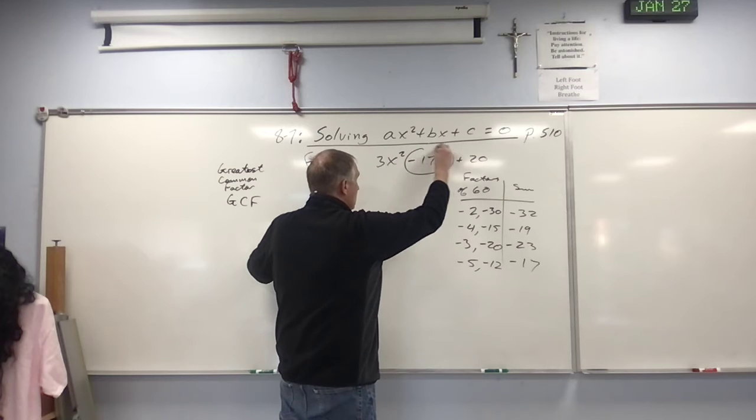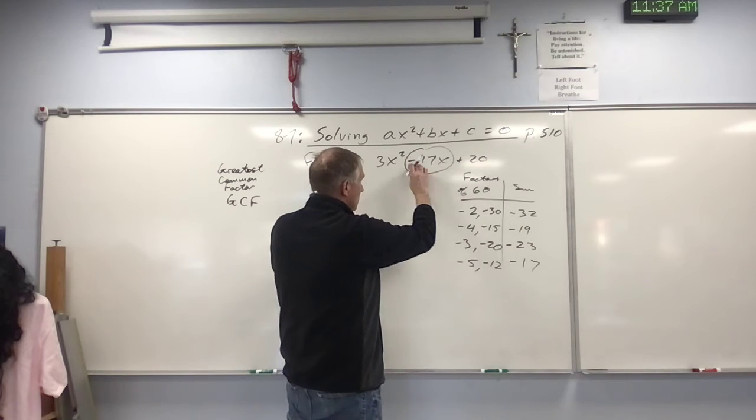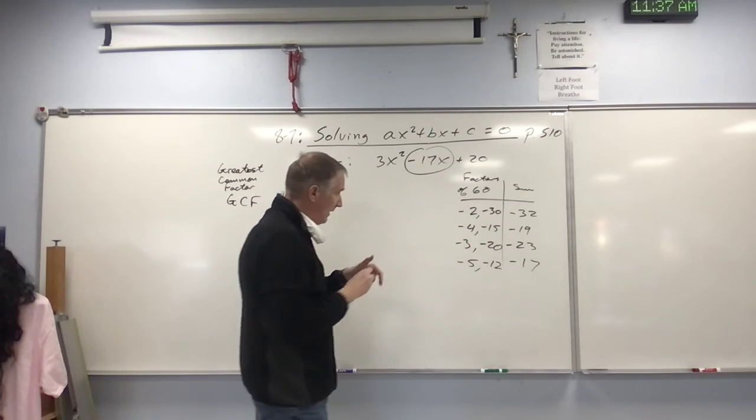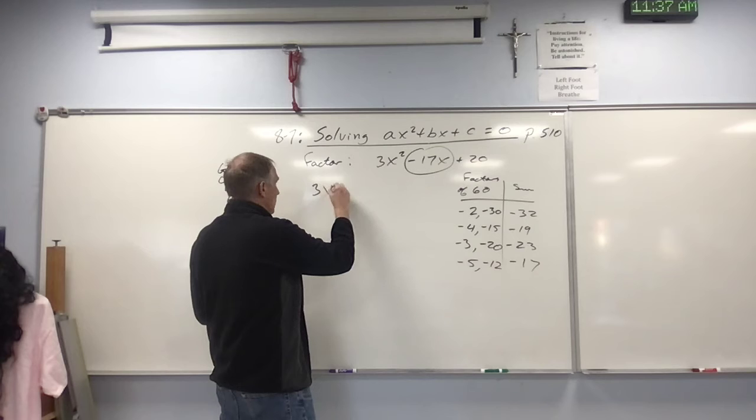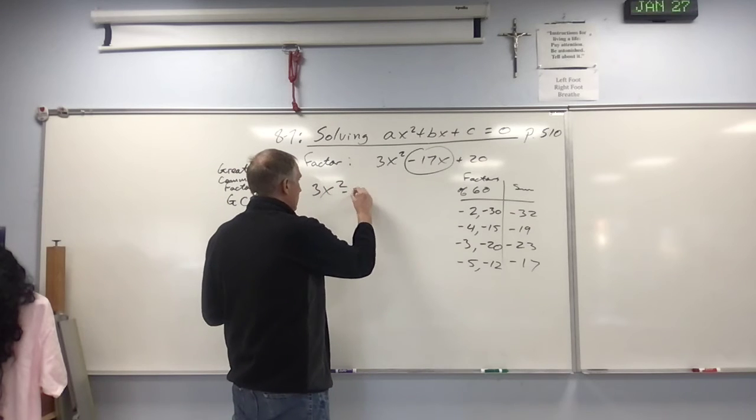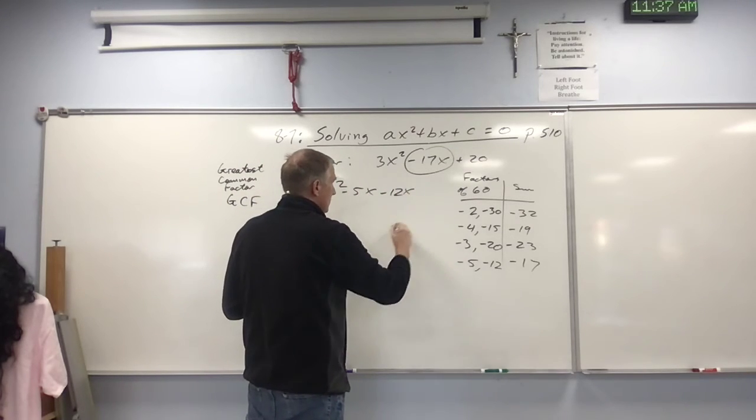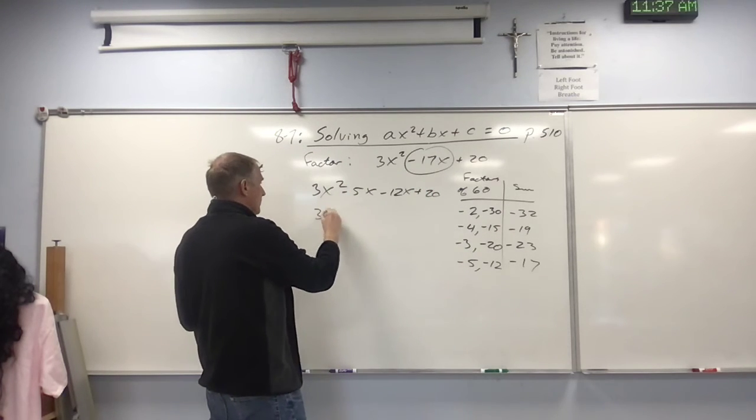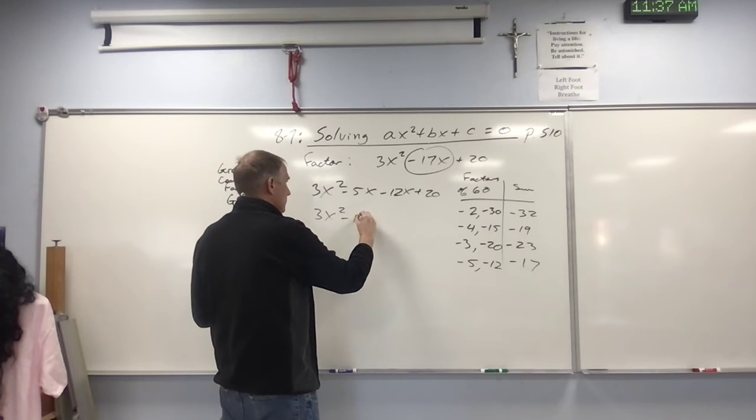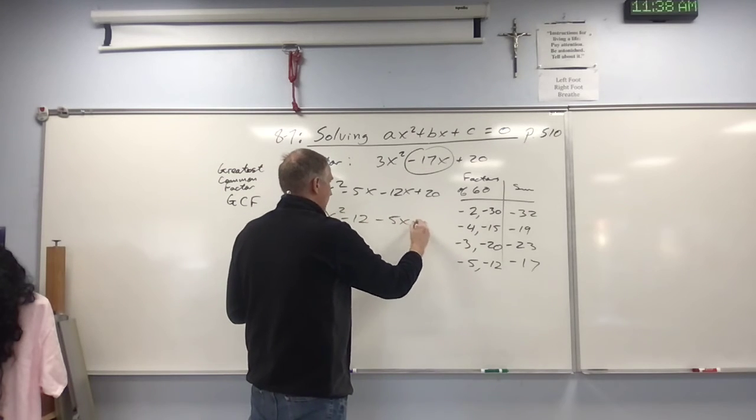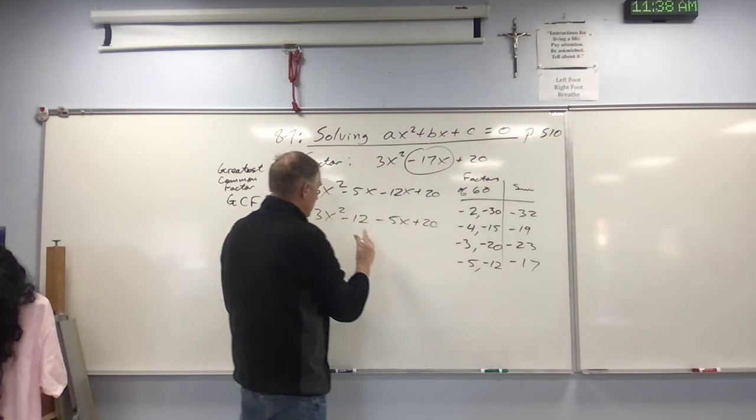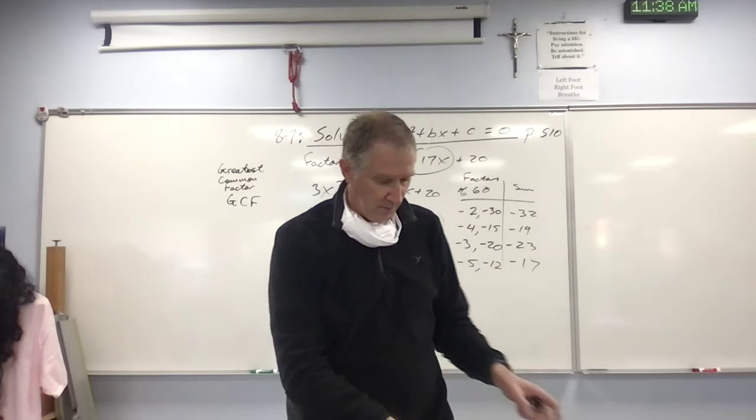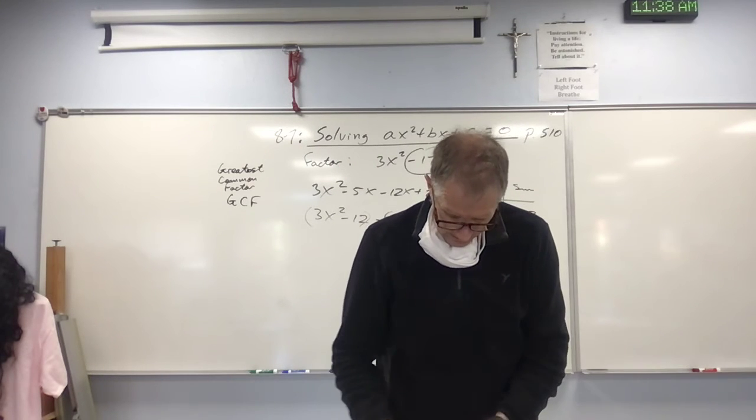So that just saves you some time. When you see a negative sign here and these are positive, you know it's the negative factors you're looking for. Then you continue on and you'd have to factor this thing. So 3x squared minus 5x minus 12x plus 20. I don't want to spend too much time on this. Then you're going to group and solve. But I want to move on to one last thing before I run out of time here.